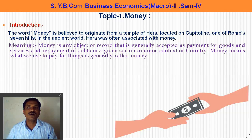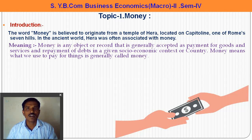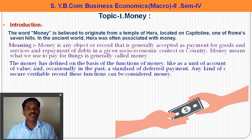Every country uses a different currency for exchange and transactions. America uses the dollar, India uses the rupee, and England uses the pound. Every country has a different unit of measurement of money used for transactions and as a medium of exchange. So money is any object, any paper, any material which is generally accepted as payment for goods and services, repayment of debt, within the socio-economic context.